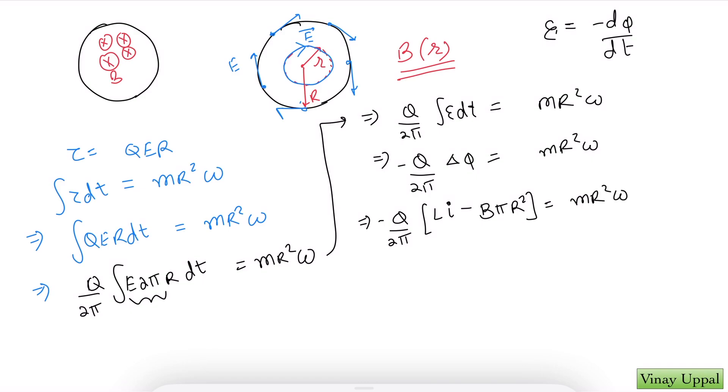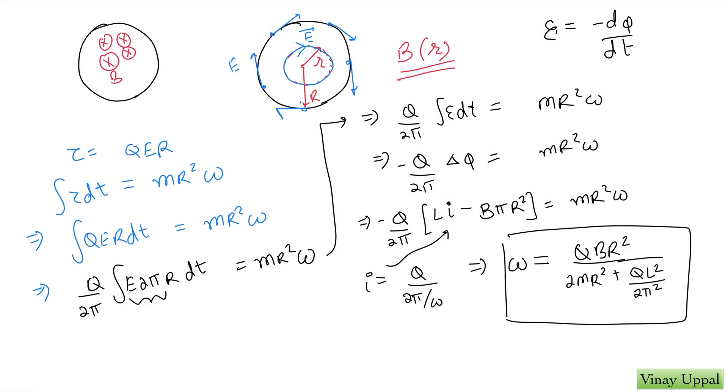And what about current? Can I write current in terms of the charge? Charge divided by simply the time period 2π by ω. So just substitute current here. And that's it. You'll get your angular velocity. So this is my angular velocity that will be acquired by the ring.